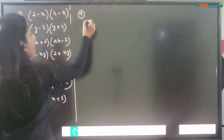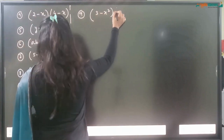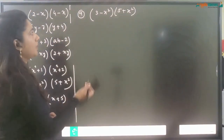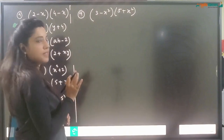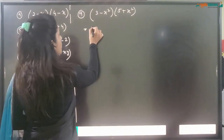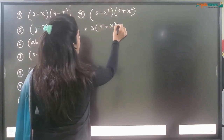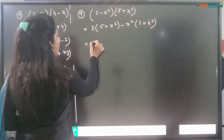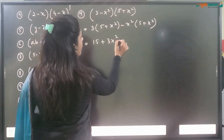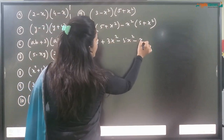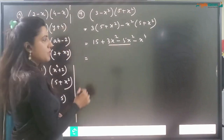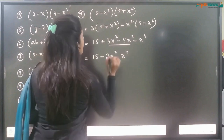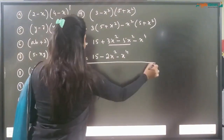Question number 9: (3 - x²)(5 + x²). We can't use the formula because one term is -x² and the other is +x². Multiply normally: 3(5 + x²) - x²(5 + x²) = 15 + 3x² - 5x² - x⁴ = 15 - 2x² - x⁴. This is the answer for the 9th question.